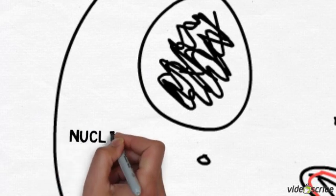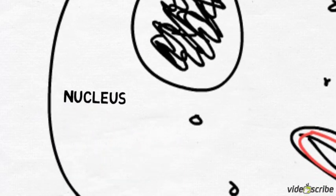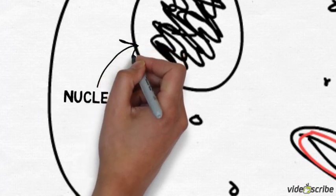The nucleus contains genetic material surrounded by a membrane. There's chromosomes in there and they're made of DNA.